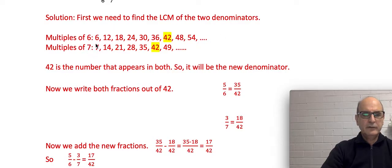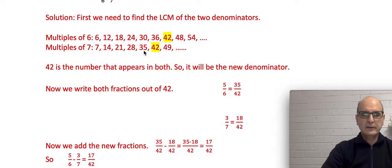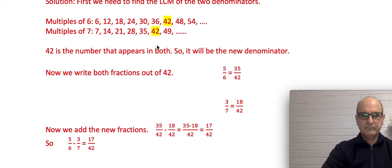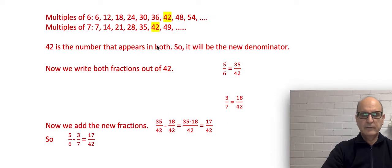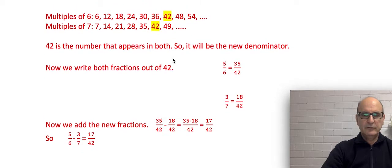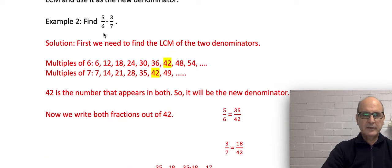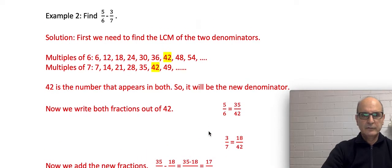In the same way, to find the multiples of 7, we start with 7 and keep adding 7: 7, 14, 21, 28, 35, 42, 49. The lowest common multiple is the smallest number that appears in both sets. In this case, 42 is the first number we can see in both sets, so 42 is our lowest common multiple and will be our common denominator.